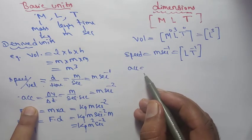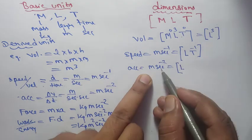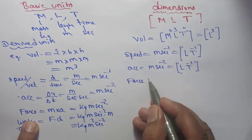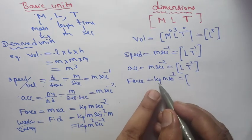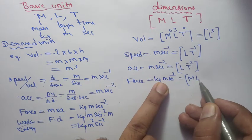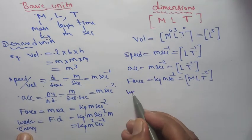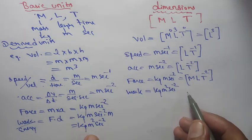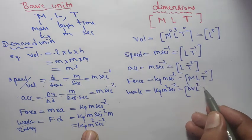Acceleration is in m s⁻². So dimension of acceleration: meter = length, second⁻² = T⁻². Dimension = [L T⁻²]. Force is in kg m s⁻². Kilogram = mass, meter = length, second⁻² = T⁻². Dimension of force = [M L T⁻²].